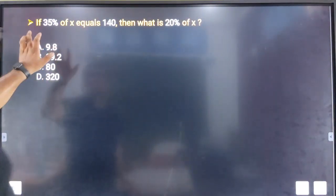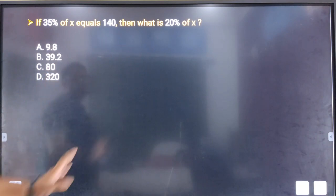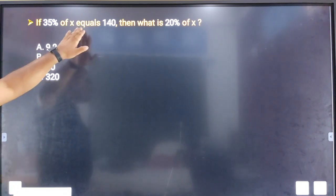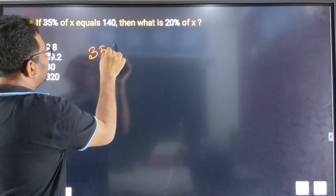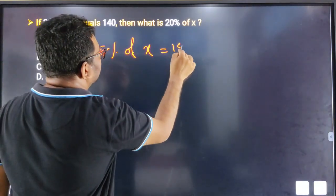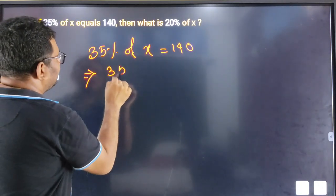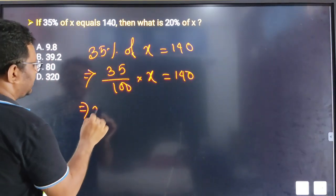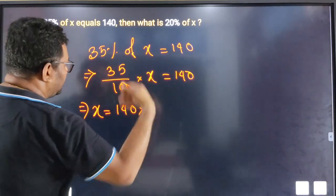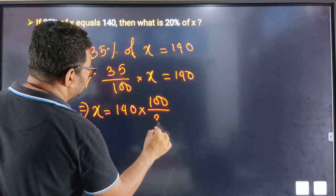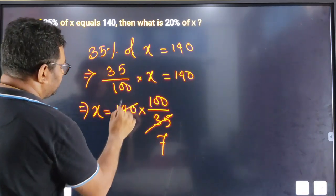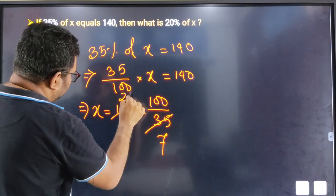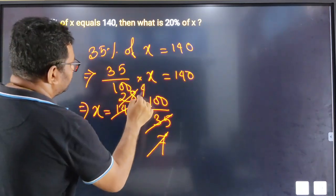Next question: If 35% of X equals 140, then what is 20% of X? So 35 divided by 100 multiplied by X equals 140. Therefore X equals 140 multiplied by 100 divided by 35, which gives X equals 400.